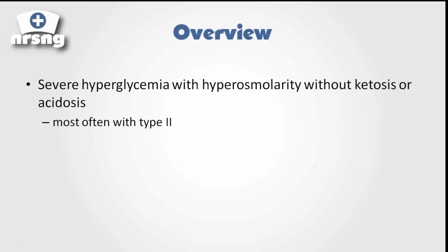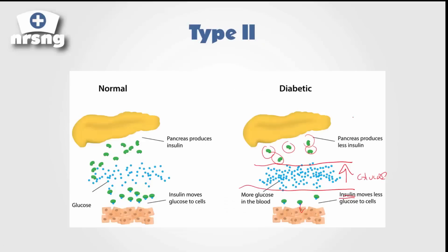An important thing to keep in mind here is we have a little bit of insulin. So we have a little bit of blood sugar — this glucose — passing into the cell. That little bit of glucose passing into the cell helps to prevent the body from becoming acidotic, from breaking down those ketone bodies and those fatty acids and becoming acidotic.